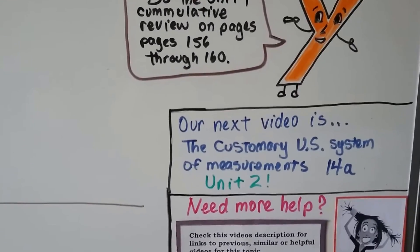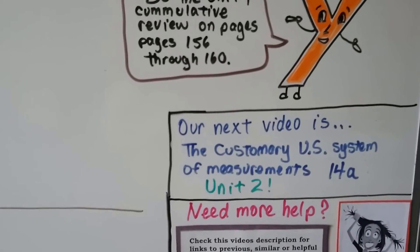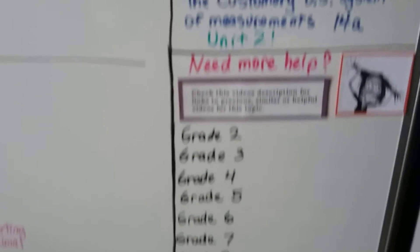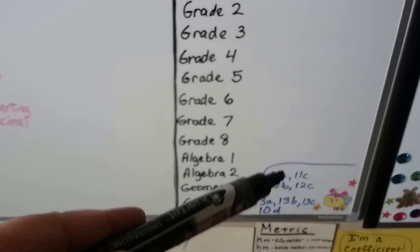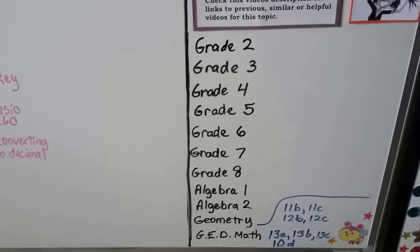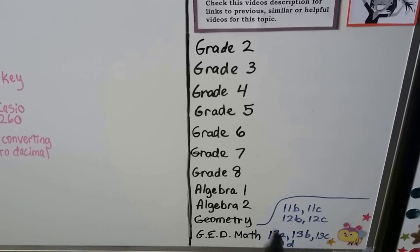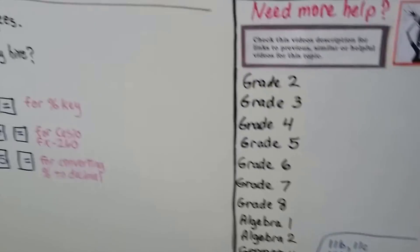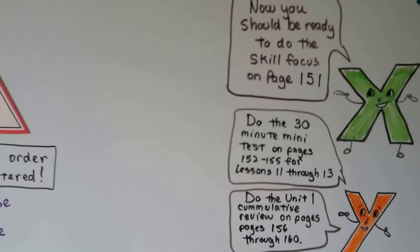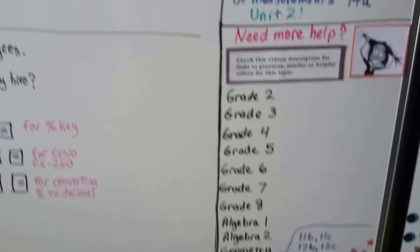Our next video is Unit 2. We're going to be doing customary US system of measurements. It's lesson 14A. I'm going to have links to these GED math videos that we've done so far to help you out in case you do have trouble. That'll be where you can get real quick answers to anything that you had problems with in the skill focus on page 151. These would be the videos to go to to find out what happened and where you went wrong.